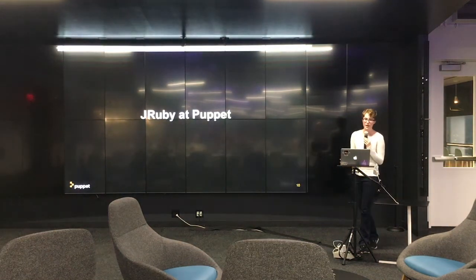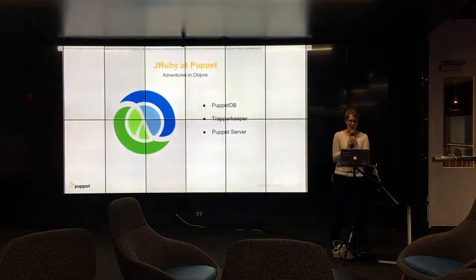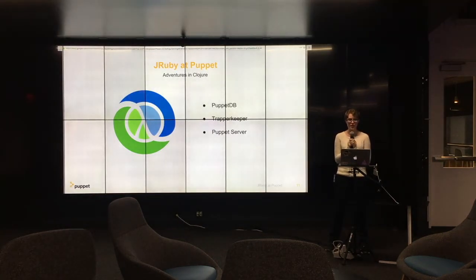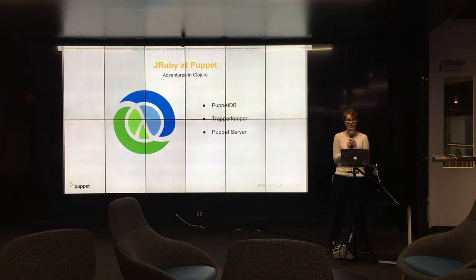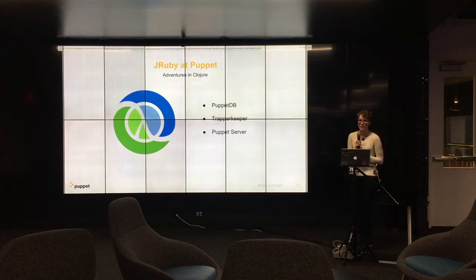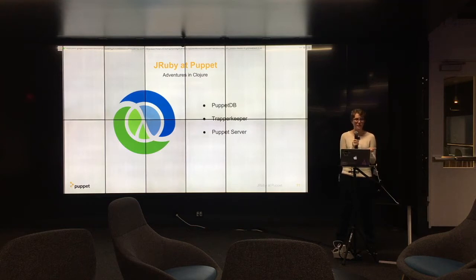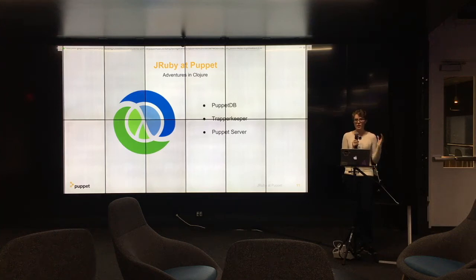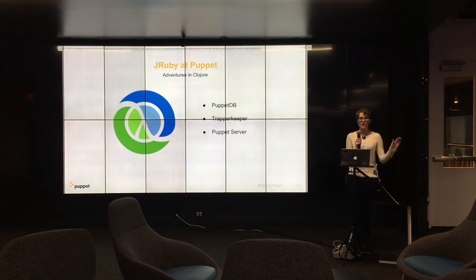How did we get here at Puppet? Our first foray into the JVM had nothing to do with JRuby. We had people at the company who had started learning Clojure, which is a functional language and a derivative of Lisp. Functional languages are really good for applications that have a lot of concurrency needs — they force different kinds of discipline on the programmer — and a lot of people at Puppet thought this was a cool idea.